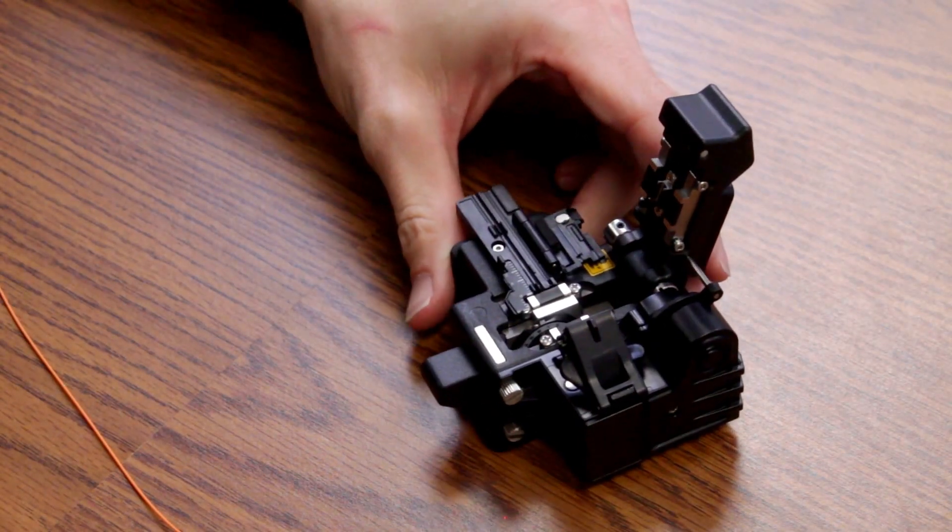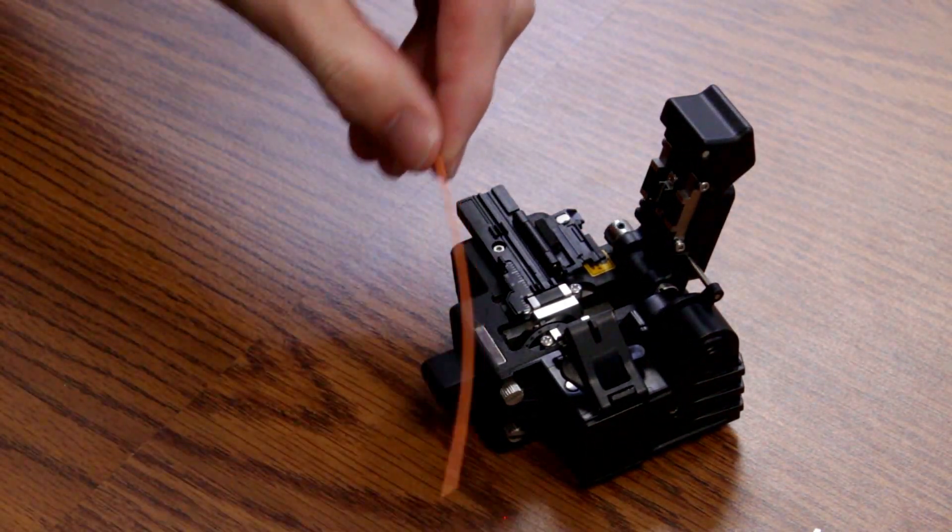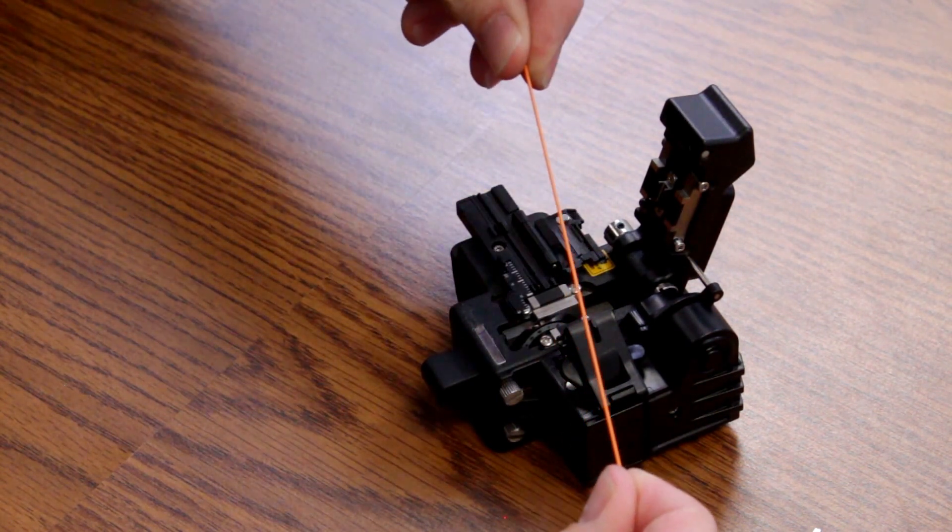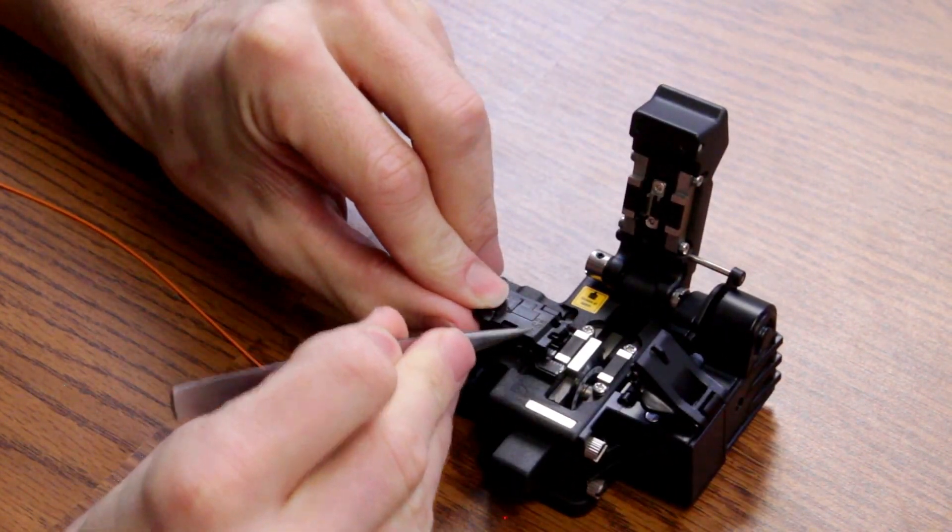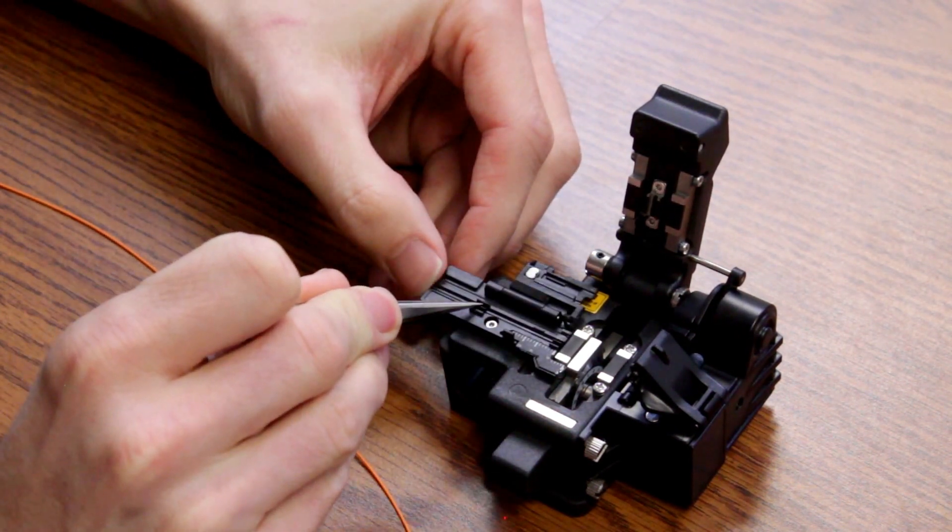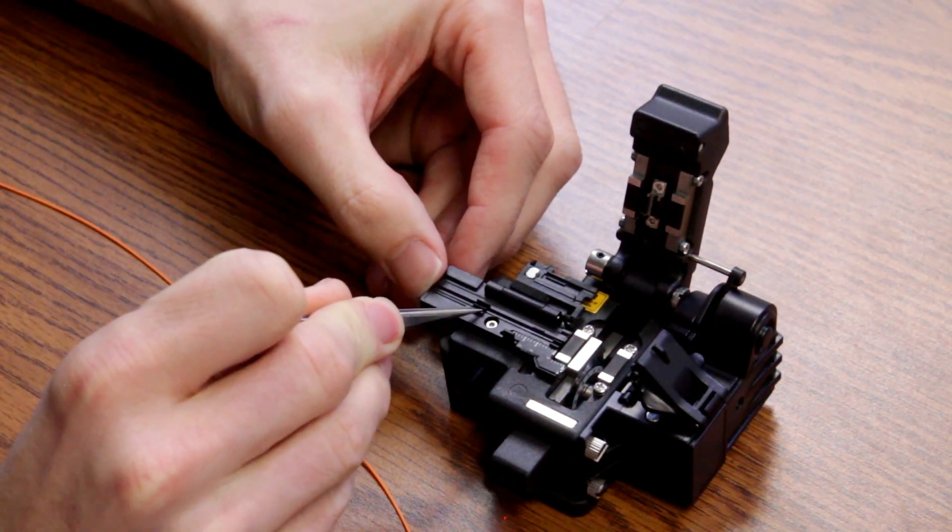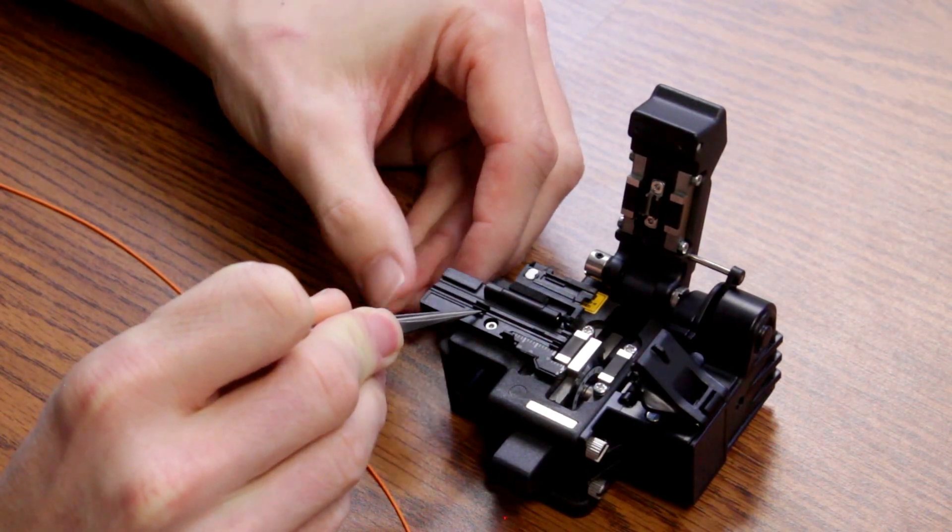So now I'm going to demonstrate a simple cleave with one of the most common types of fiber. It's a 900 micron fiber. And the fiber holder here at the top will hold a 900 micron fiber. And the one below will hold a 250 micron fiber.